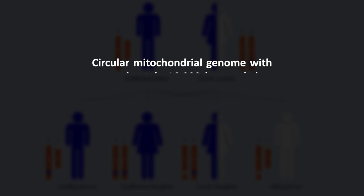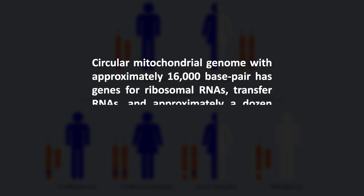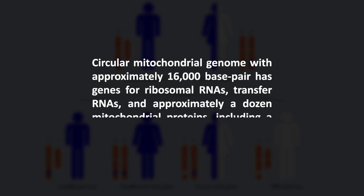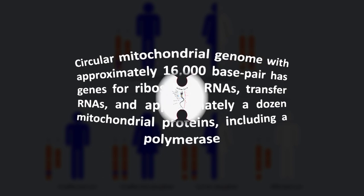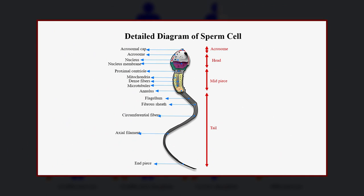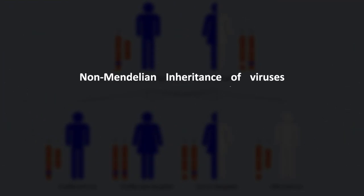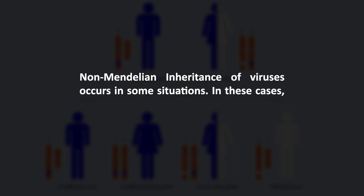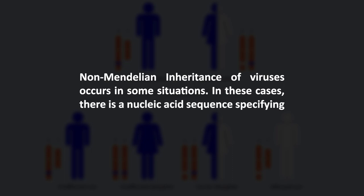The circular mitochondrial genome with approximately 16,000 base pairs has genes for ribosomal RNA, transfer RNA, and approximately a dozen mitochondrial proteins including a polymerase. Non-Mendelian inheritance also occurs for centrosomes, usually via the sperm in mammals. Non-Mendelian inheritance of viruses occurs in some situations; in these cases, there is a nucleic acid sequence specifying a non-Mendelian component.